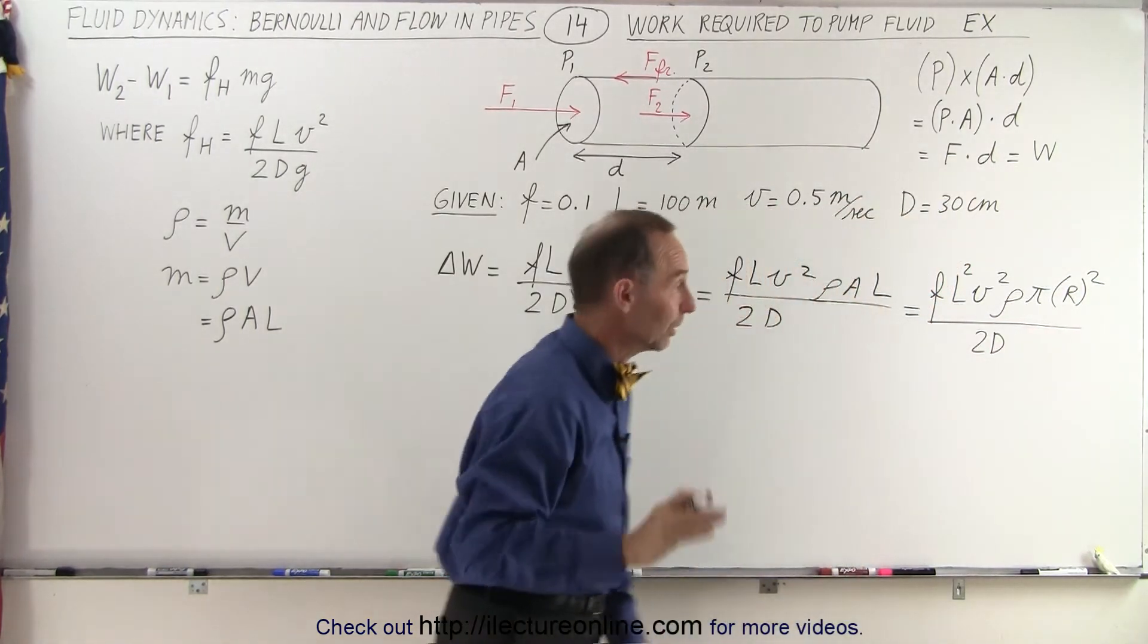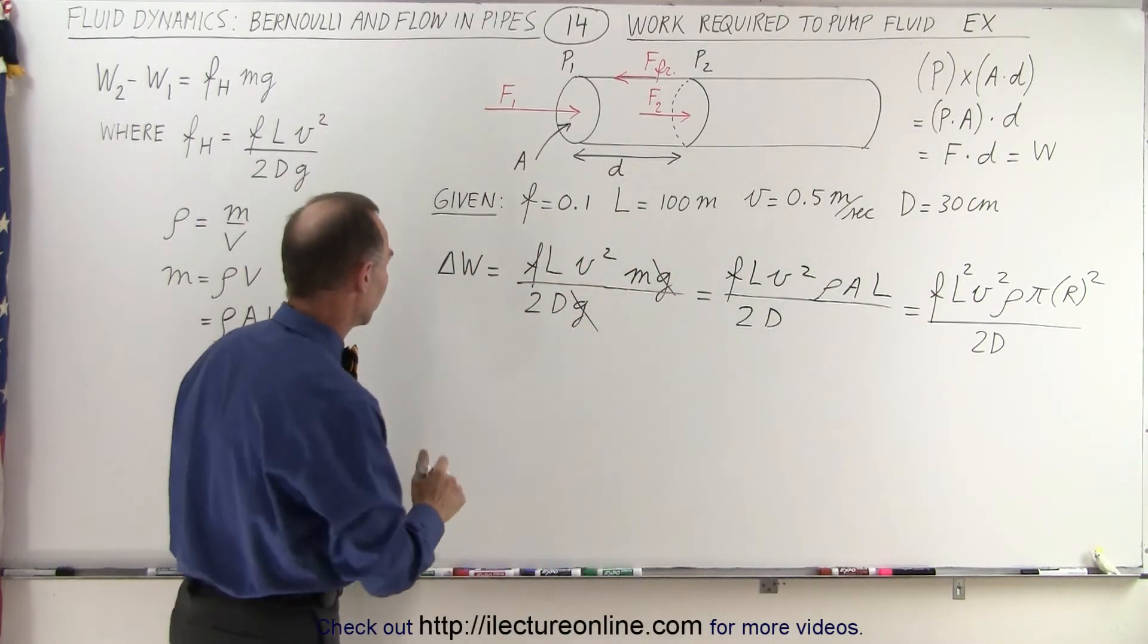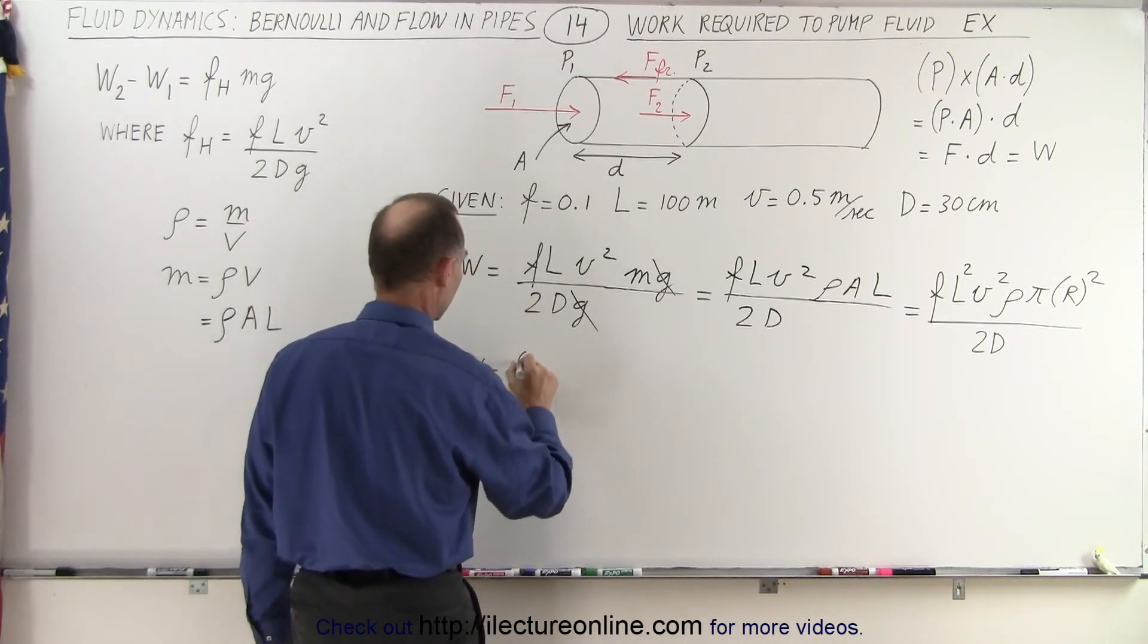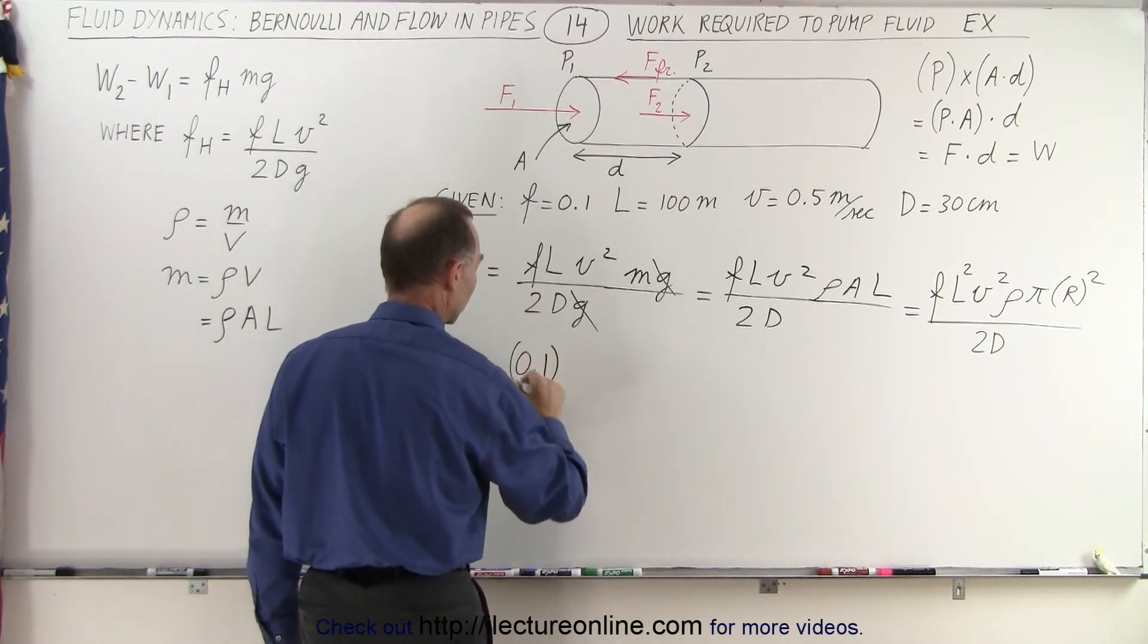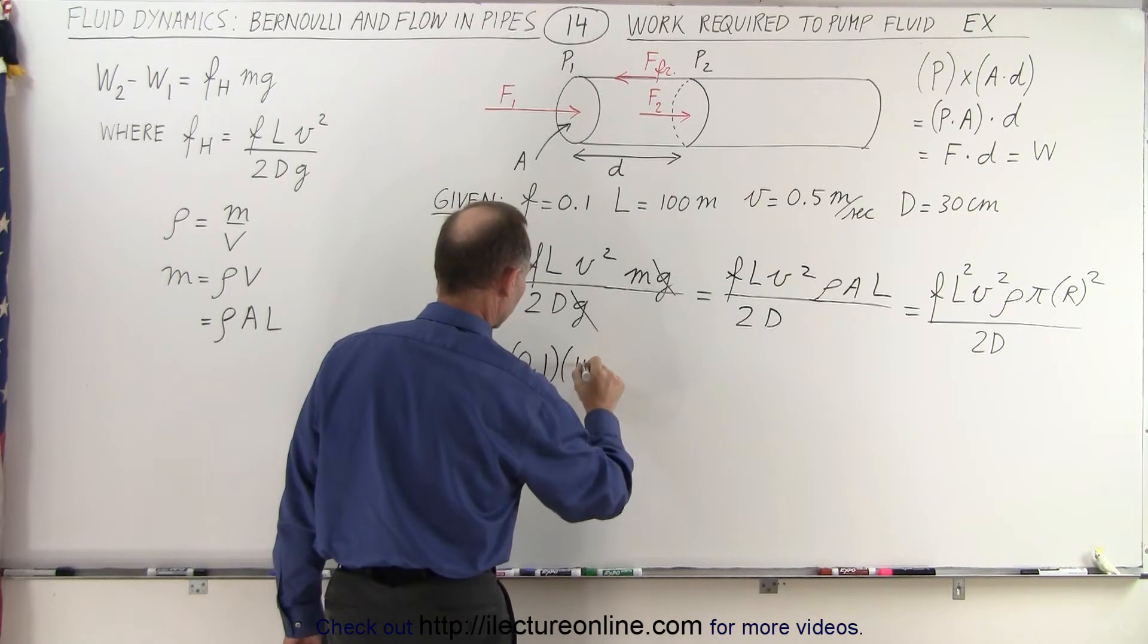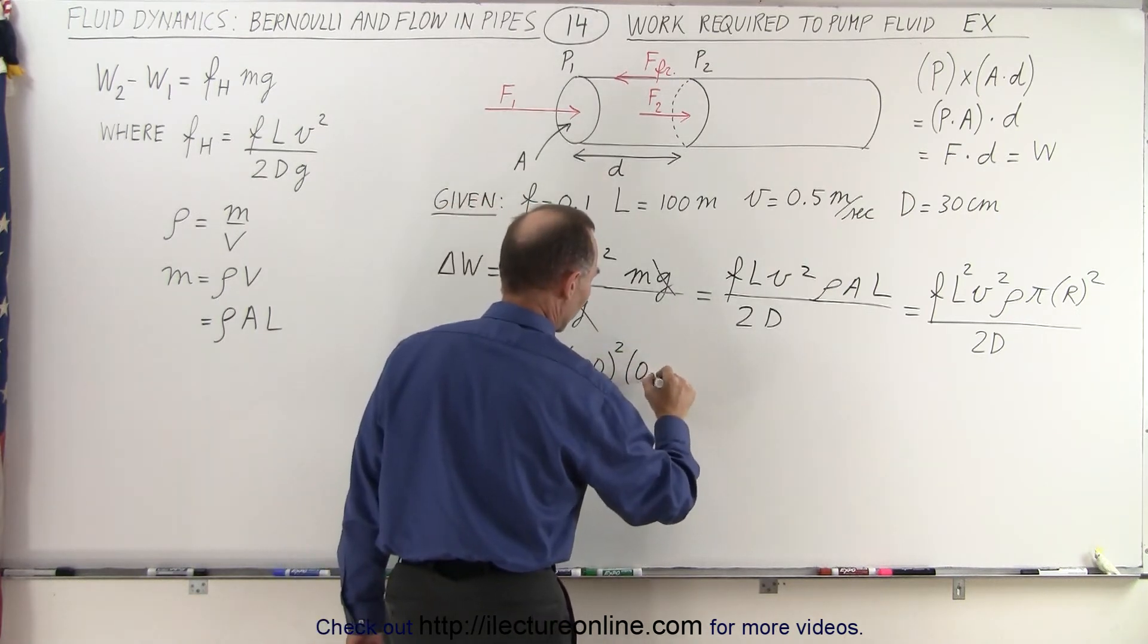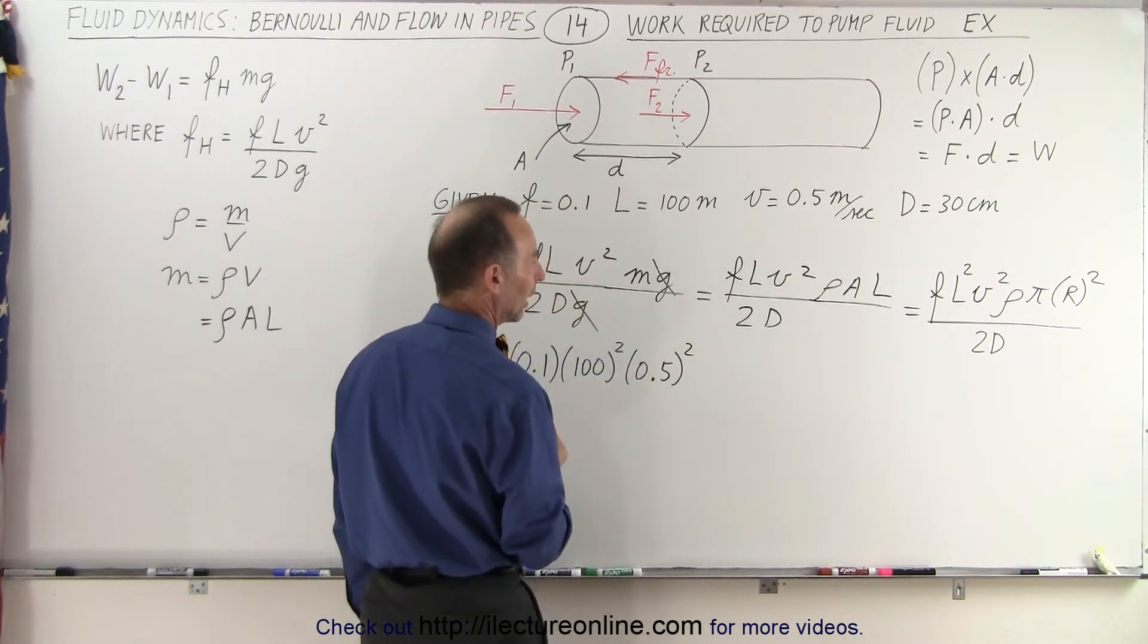And now we're ready to plug in the numbers to get the right result. So the amount of work done is going to be equal to the fraction we gave us 0.1, the length 100 meters, and we have to square that, the velocity 0.5 meters per second, then we have to square that,